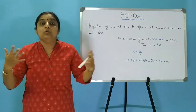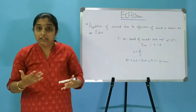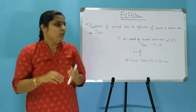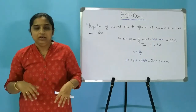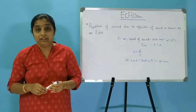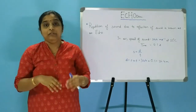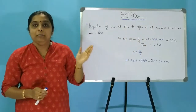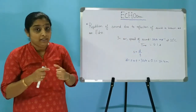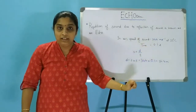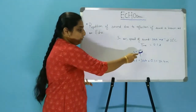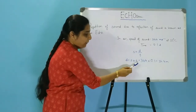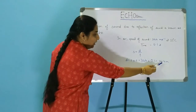In a large or empty building, the distance is more, so the difference between the original sound and the reflected sound will be more than 0.1 second. We can calculate the minimum distance for an echo using speed equals distance over time. The speed of sound in air is 344 meters per second at 22 degrees Celsius, and the persistence of sound (time) is 0.1 second. Substituting into D = S × T gives us D = 344 × 0.1 = 34.4 meters.